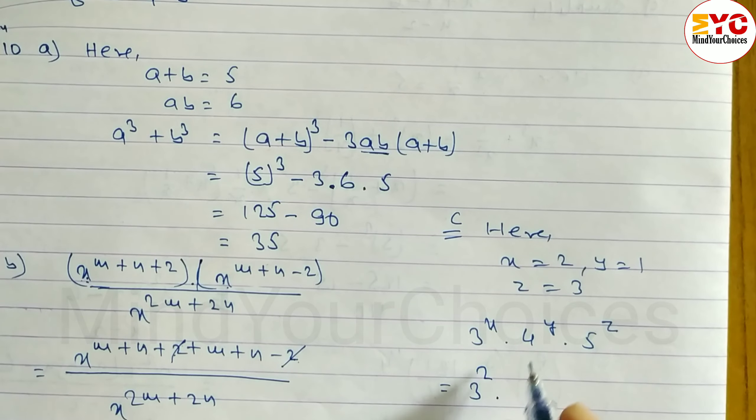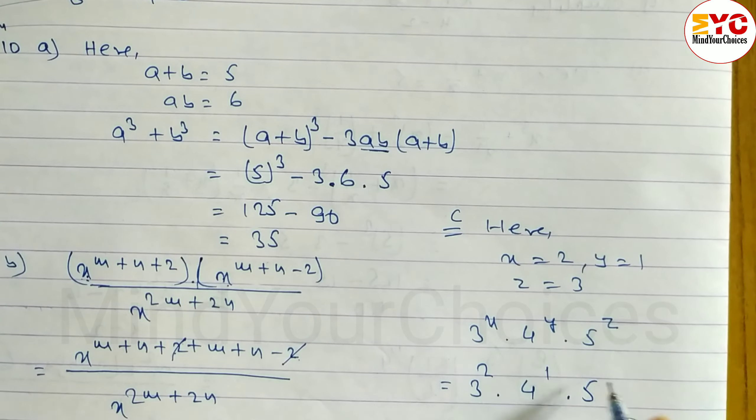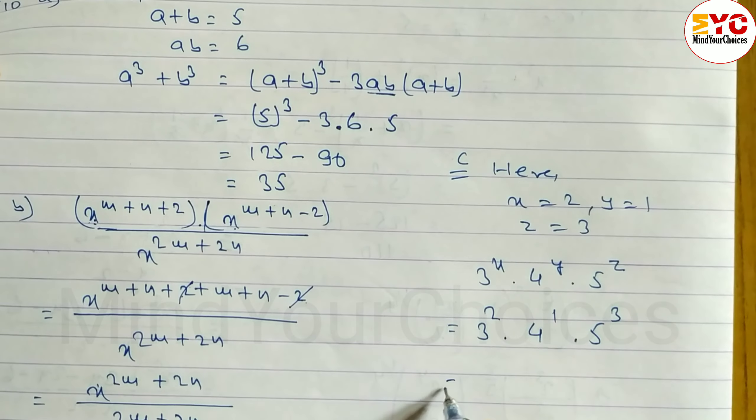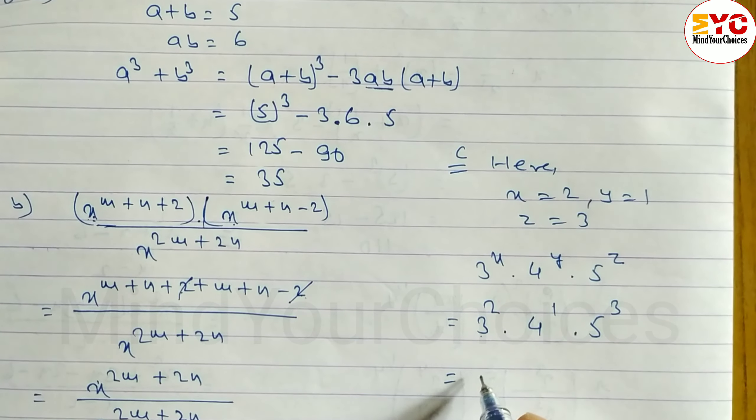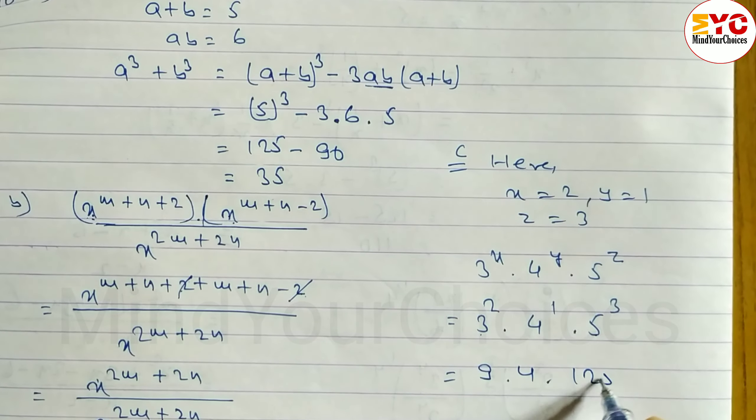X's value is 2, so write 2. 4 power y, y's value is 1, so write 1. 5 power z, z's value is 3, so write 3. 3 square means 3 into 3 which is 9. 4 power 1 means 4. 5 power 3 means 125.